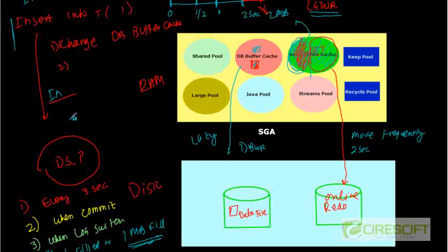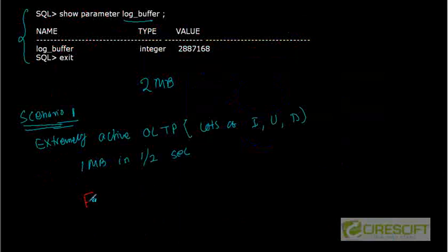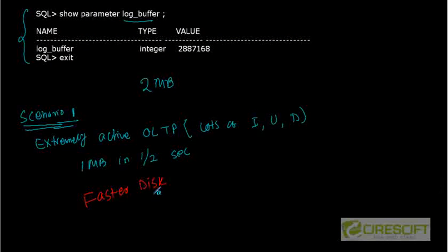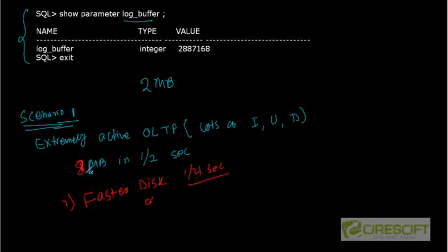So that means you have two options. Either you buy a faster disk — whenever you are writing something it returns immediately. To solve this scenario one problem you need either a faster disk so that log writer instead of taking two seconds can be done in one-fourth of a second. If it can be done in one-fourth of a second, then we are fine. Or you increase the size of your redo buffer. So instead of two megabytes, if you make it eight megabytes — in that case you increase the size of your log buffer. So option two is to increase the size of the redo buffer.